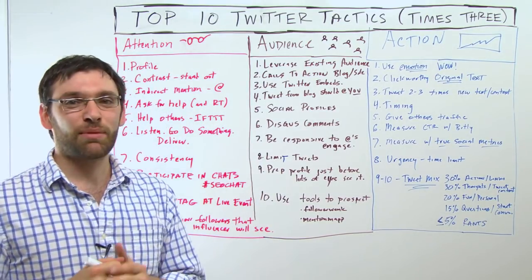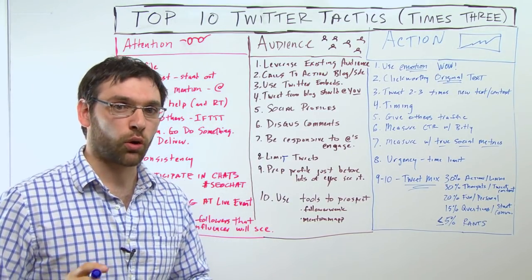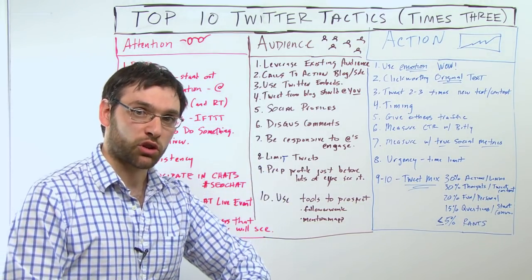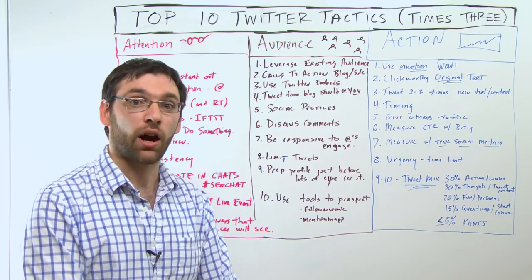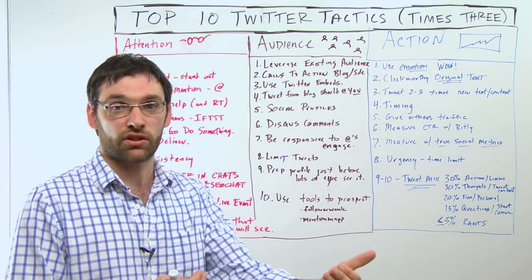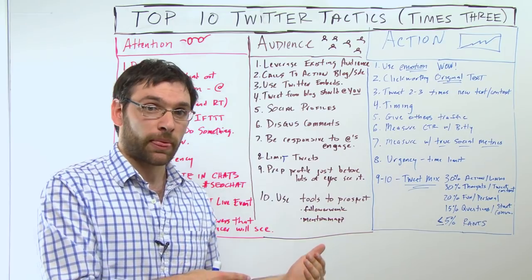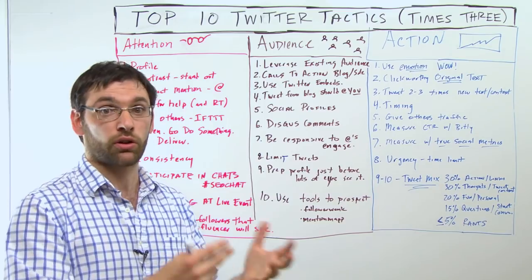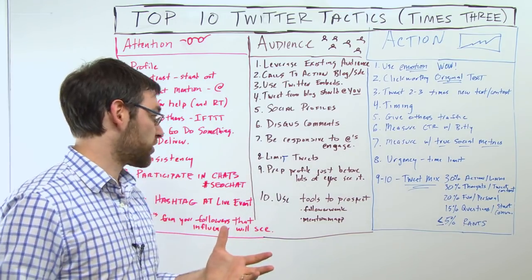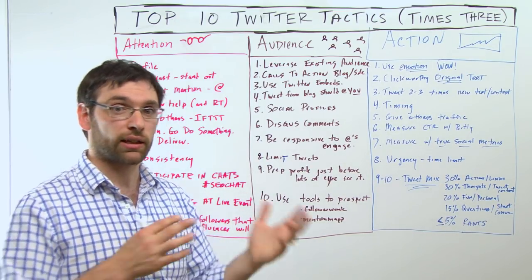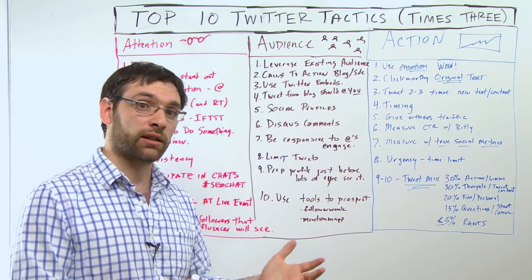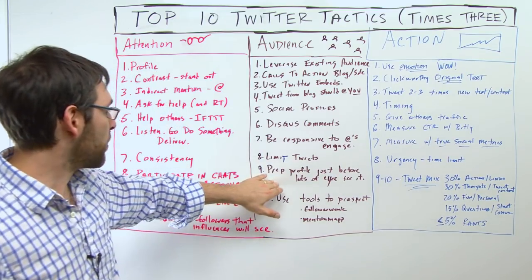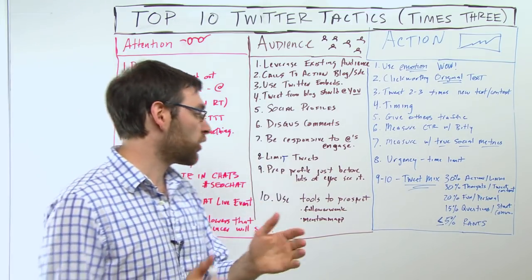Number eight: limit tweets. Think of it like a currency — the more you tweet, the value of each tweet goes down. The more of it there is, the less meaningful it is. I try to do this, and I notice a lot of people who are very successful on Twitter limit their tweets. I try to keep mine under maybe ten to fifteen a day of tweets that I'm not just chatting with somebody.